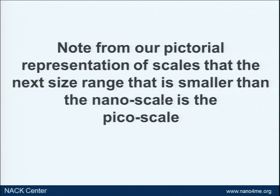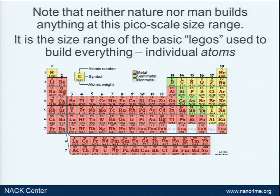The next scale smaller than the nano scale is the pico scale. Lots of folks ask whether 10 years from now we'll be talking about pico technology. The answer is no. The pico scale range is really just atoms — about all that's going on at the pico scale. We're dealing with the periodic table and various elements. Some very heavy atoms are man-made, but this is all there is at the pico scale — just atoms.